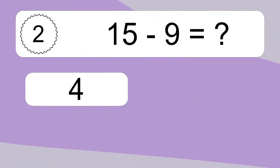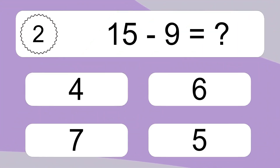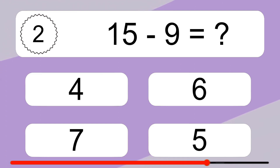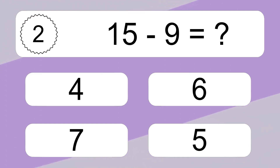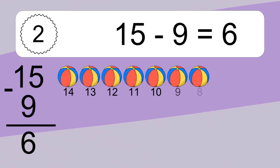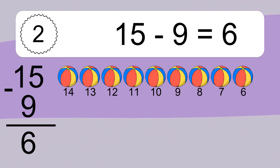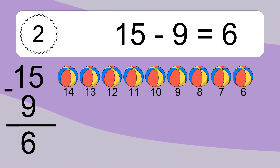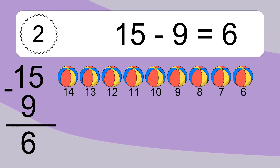15 minus 9 equals what? 15 minus 9 equals 6. Let's count it. 14, 13, 12, 11, 10, 9, 8, 7, 6.